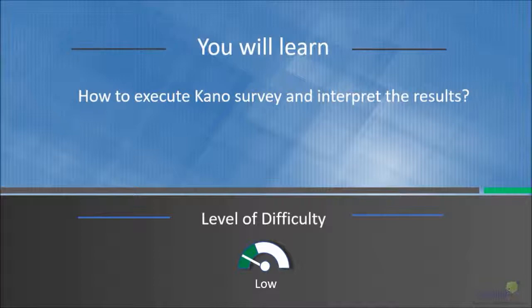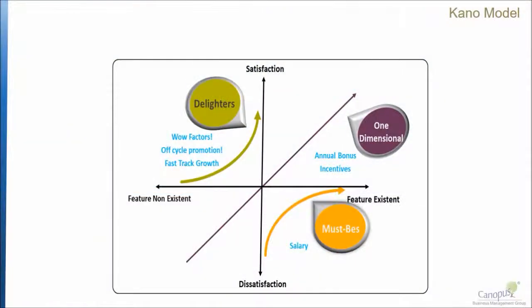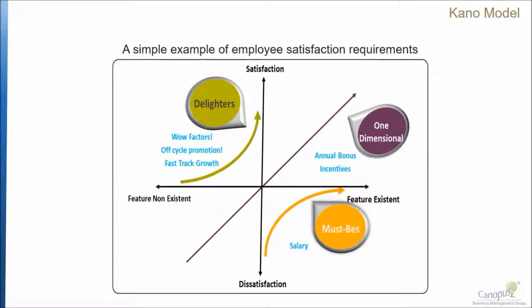In this lecture we will learn how to execute a Kano survey and interpret the results. If you recollect, in our basic course we talked extensively about the Kano model. The Kano model is used to prioritize customer needs, and it succeeds the exercise of Voice of Customer and Gemba. Once you have completed these two exercises, the next step is to find a way to prioritize the needs of the customer.